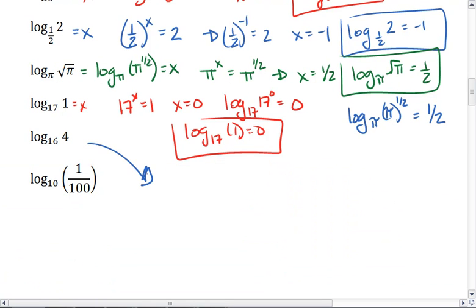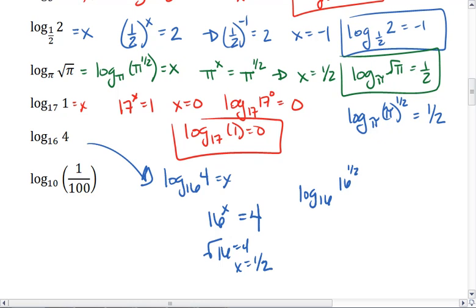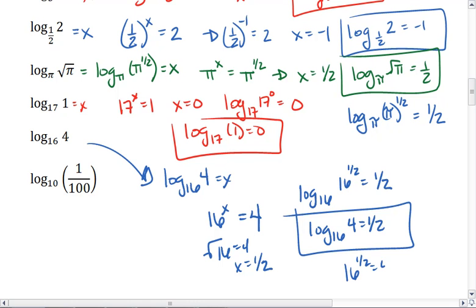For the next one, log base 16 of 4. This means that 16 to the x equals 4. Then we know that the square root of 16 equals 4, so x has to equal 1 half. Or we could write this as log base 16 of 16 to the 1 half, which equals 1 half. Again, either case, you get log base 16 of 4 equals 1 half, because 16 to the 1 half equals 4.